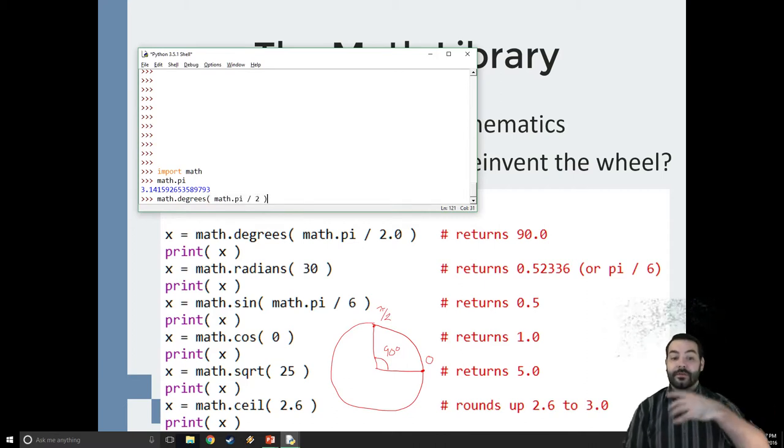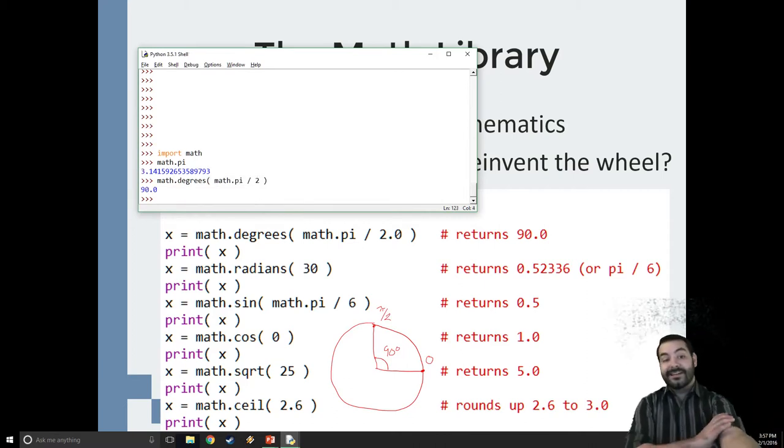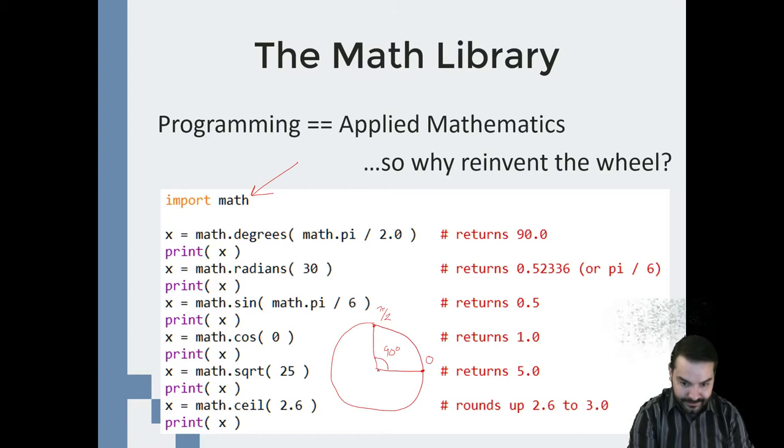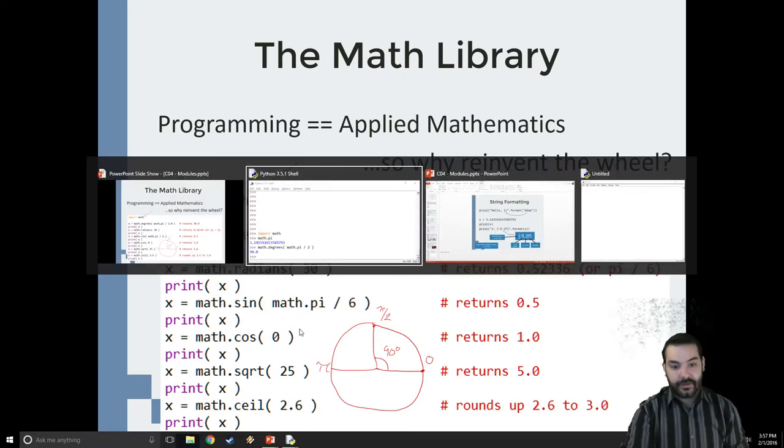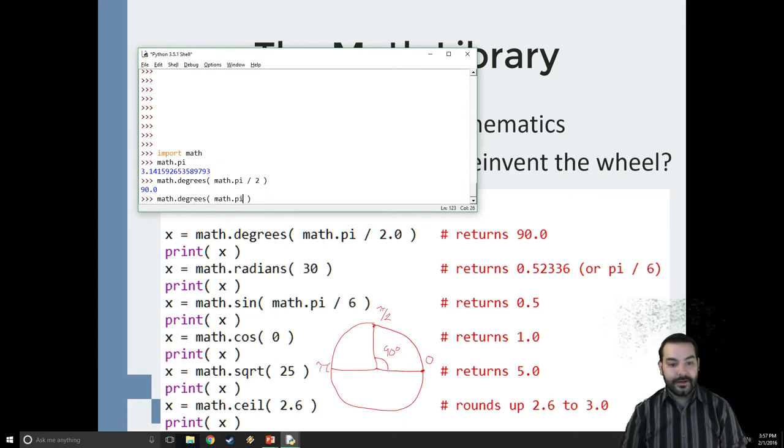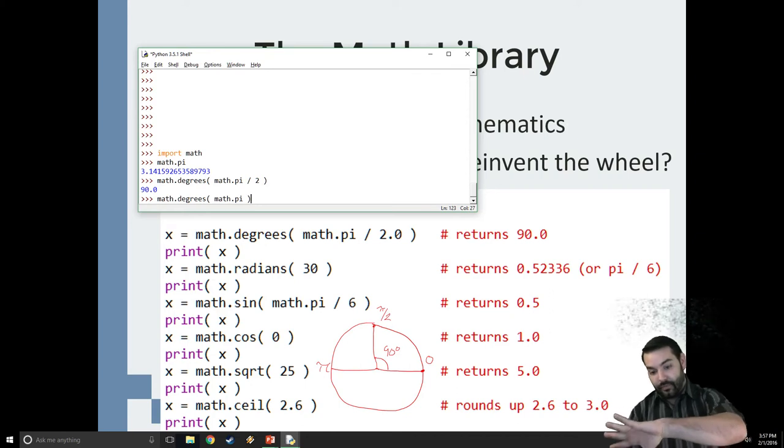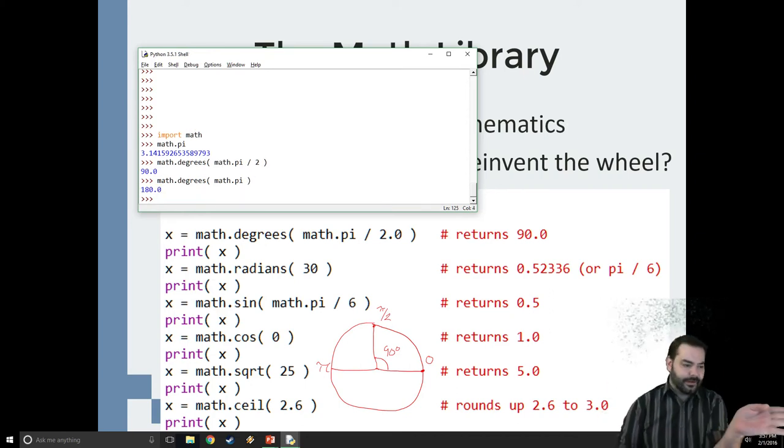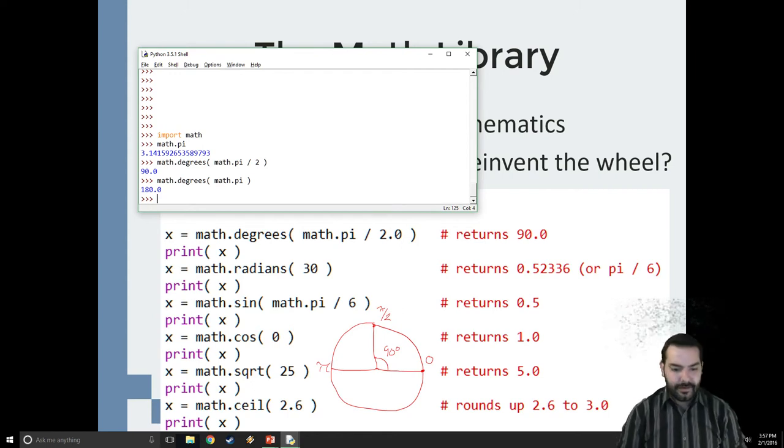You can see that when I hit enter, it gives me 90 degrees. As you can probably guess, if I follow the same structure but get rid of that dividing by 2, instead of 90 degrees, I've gone from 0 degrees to 180 degrees.